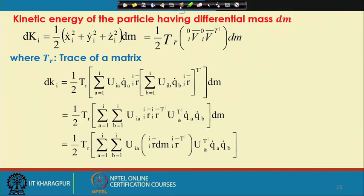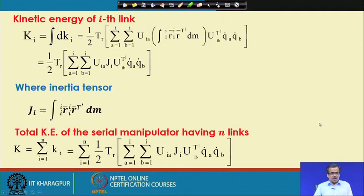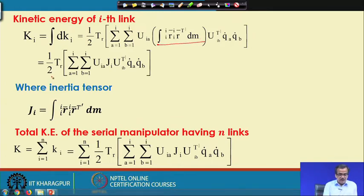This is the expression for the kinetic energy of the differential axial mass dKi. Once we have that, we can find out the kinetic energy of the ith link Ki, which is nothing but the integration of dKi. That equals half trace — I have simply put one integration sign here. This can be written as half trace, summation a equals 1 to i, b equals 1 to i, U_ia.